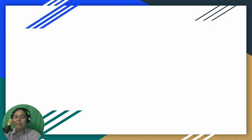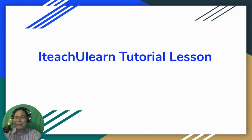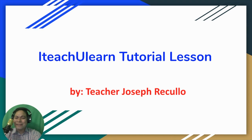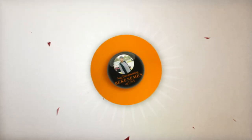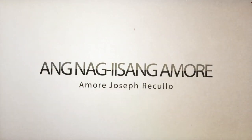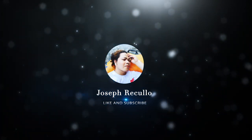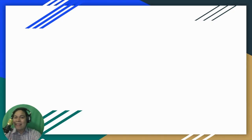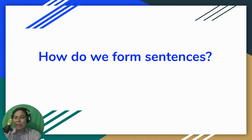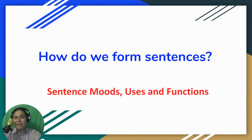Hello everyone, teachers, students, pupils, and parents. Welcome to another episode of I Teach You Learn Tutorial Lesson. This is brought to you by Teacher Joseph Rekulio. We're going to discuss one of the basic lessons in English, and that is how do we form sentences according to moods, uses, and functions. It's very important to identify its uses and functions and moods because there are different kinds of sentences, and today we're going to discuss each one of them.